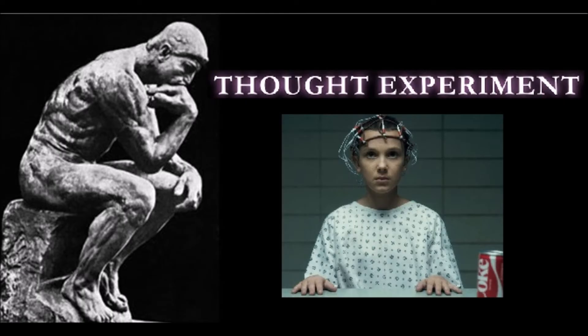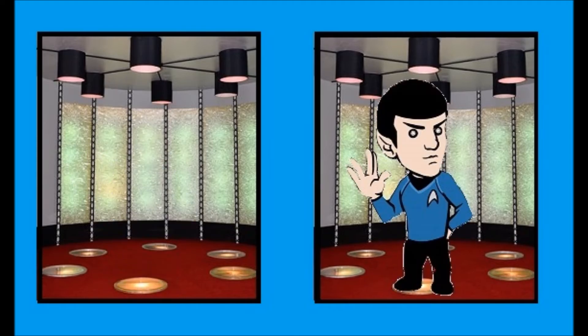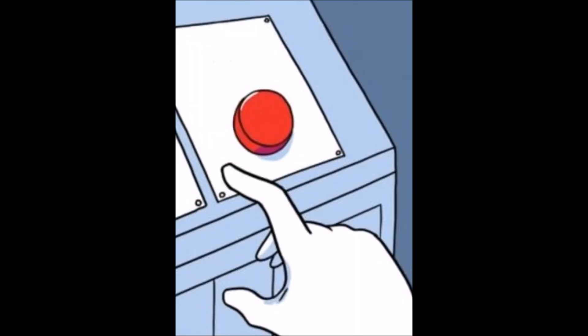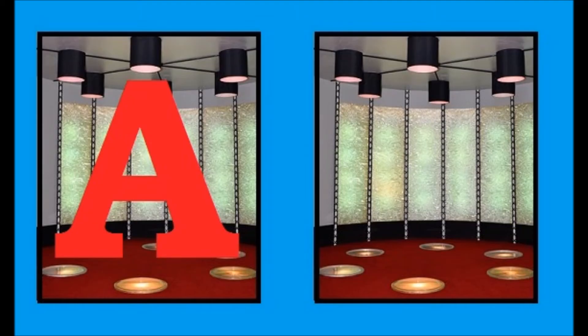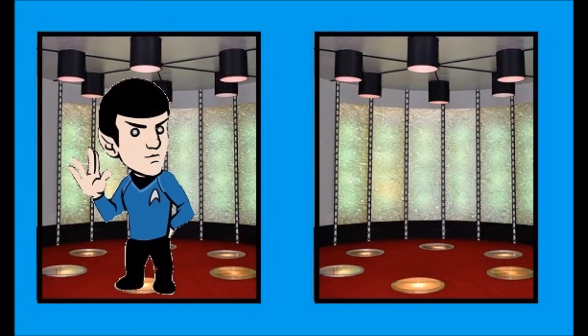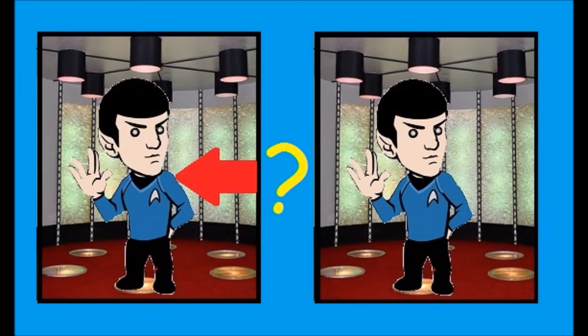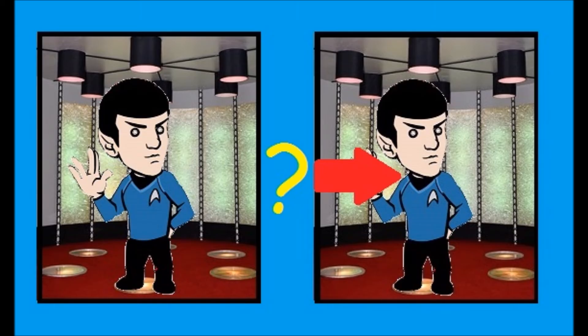So here is your thought experiment. When Spork is teleported from point A to point B, there is a question about what happens to Spork in transit. When we press the button to teleport Spork from A to B, there is a sense in which Spork is destroyed and recreated at B. But does this mean that the real Spork is at point A and the Spork at B is merely a copy? If so, then isn't the teleporter machine really a death machine?